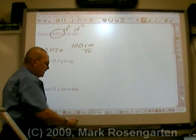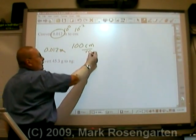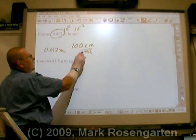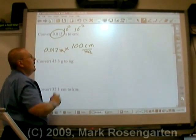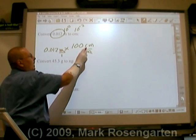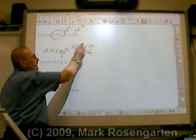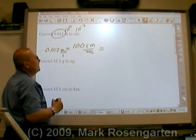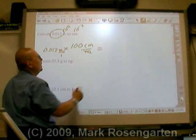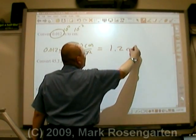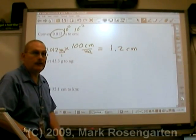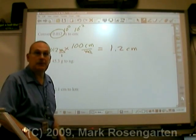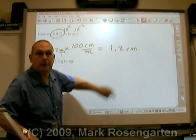Now what we have to do is decide, how are we going to cancel out meters and be left with centimeters? Well, to cancel out meters, you have to multiply these two numbers. Meters over one times centimeters over meters. The meters cancel and leave you with centimeters over one, also known as centimeters. So 0.012 times 100 is 1.2 centimeters. Now pay attention. The number of significant figures that you start with in your measurement are the same number of significant figures you will end up with when you're done.